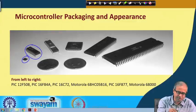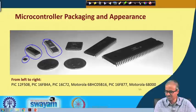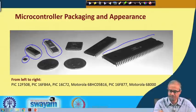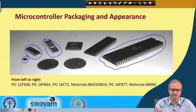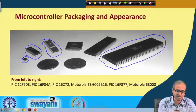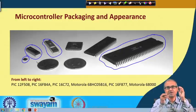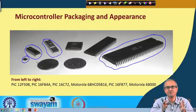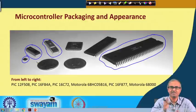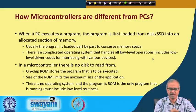Regarding microcontroller packaging and appearance, these are some typical microcontrollers manufactured by a company called PIC. In comparison, one of the older microprocessors, the Motorola 68000, was a 48-pin chip, very large in size. In comparison, the smallest PIC processor is so small it is a fraction of the size of a coin. This small size makes it very convenient to use in small embedded system applications — that is the main advantage.